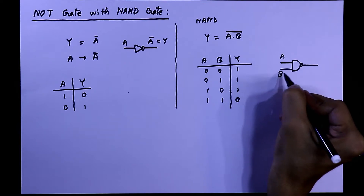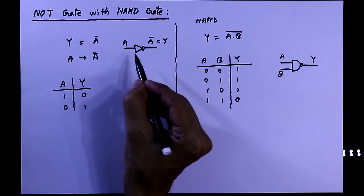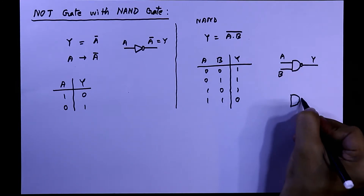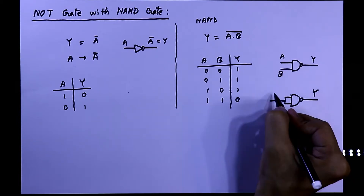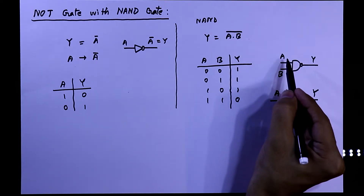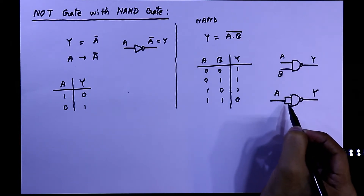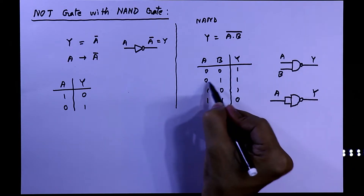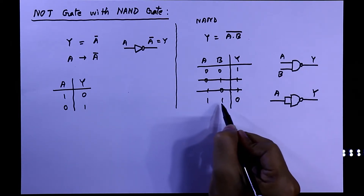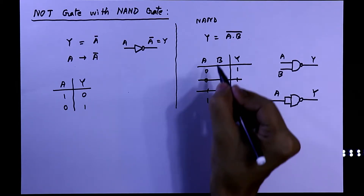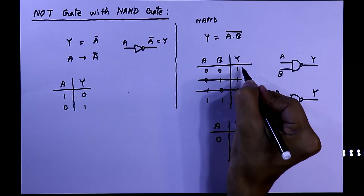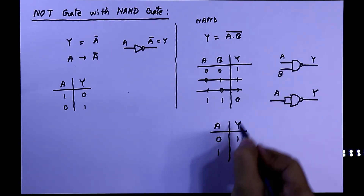The NAND gate has two inputs a and b, and y is the output. Now you can see it has two inputs but NOT gate has only one. So to make it a one-input gate, we will short both the inputs and say only a is the input, meaning both inputs are the same: if a is 0, b is also 0, and if a is 1, b is also 1. Then we get one input. We eliminate the rows with different inputs. The remaining rows: 0 0 gives output 1, and 1 1 gives output 0.